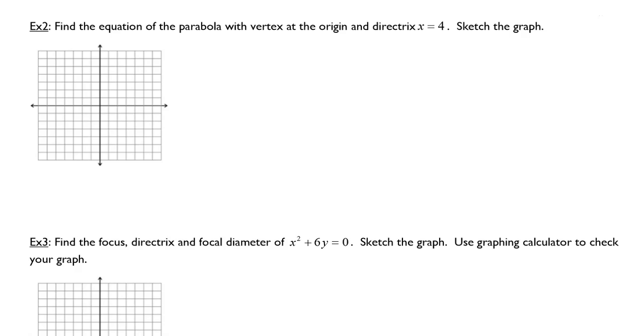I'm going to actually sketch the graph first because I think it will help me figure out what the equation should be. Since I know that the directrix is x equals 4, that means I have a vertical line at positive 4. So here is this vertical line at x equals 4.